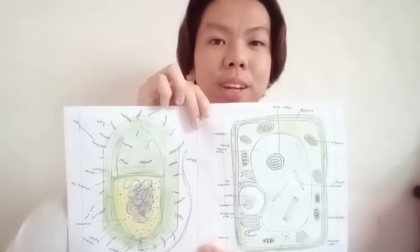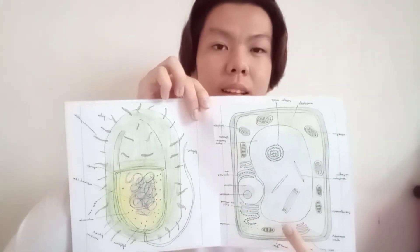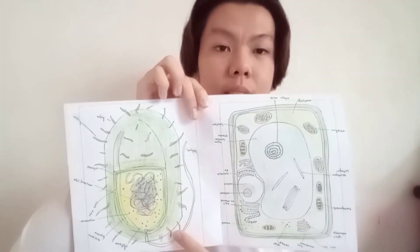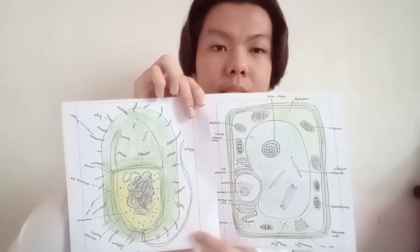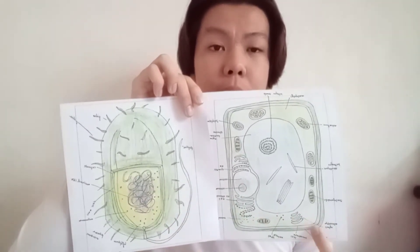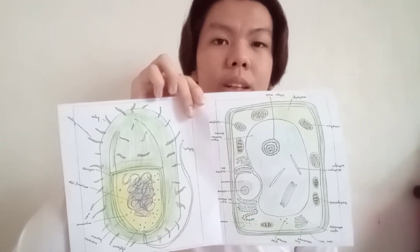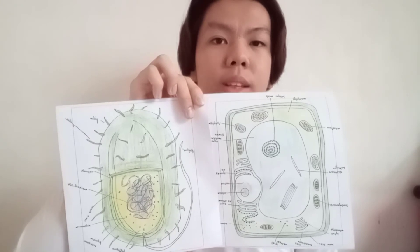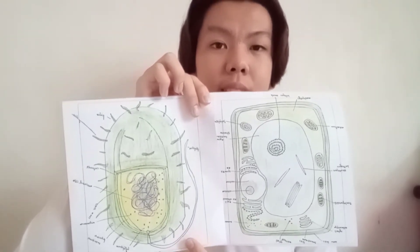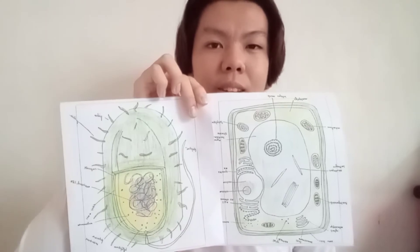As you can see on my drawing, the eukaryotic cells have more parts than prokaryotic cells, and it is more complex because eukaryotic cells are multicellular while prokaryotic cells are unicellular.